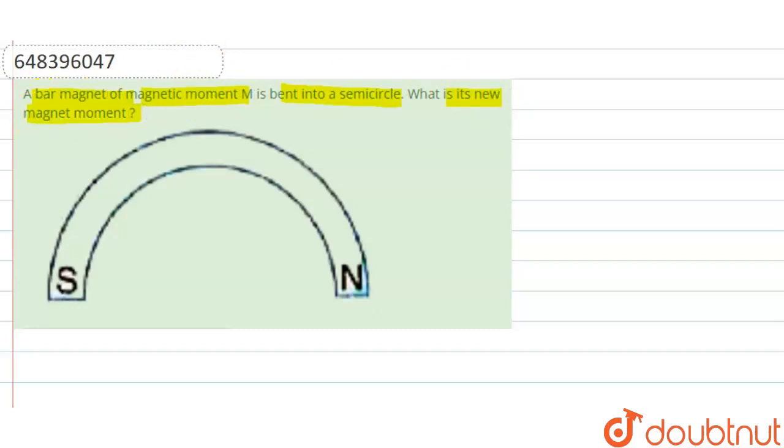In this question, we are given that initially we have a bar magnet, and this bar magnet is now bent into a semicircle as shown in the figure. We have to calculate